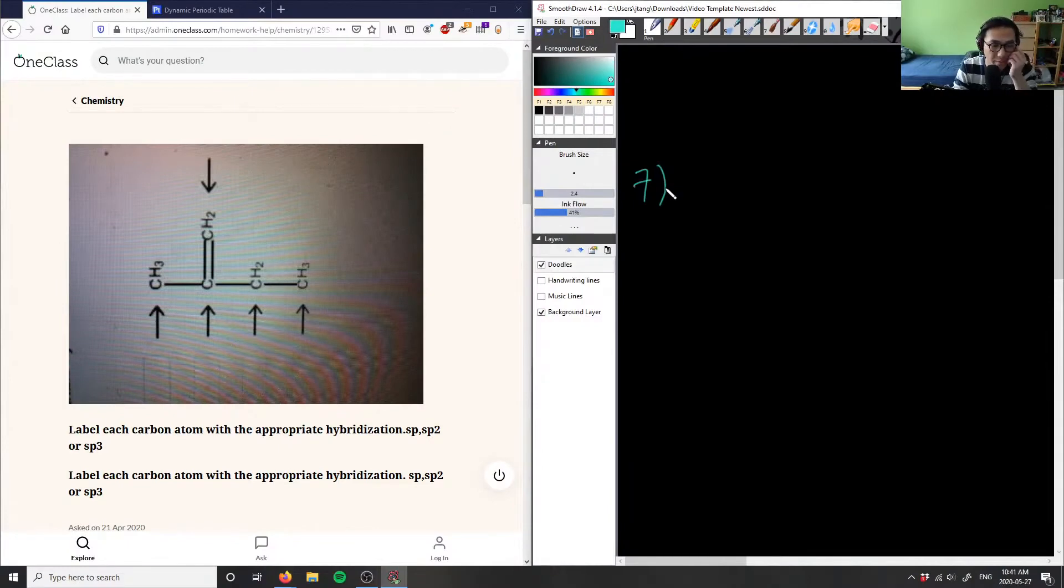This is label each carbon atom with the appropriate hybridization: sp, sp2, or sp3. So I'm going to re-rotate this and I'm going to write H3C here bonded to C bonded to CH2.